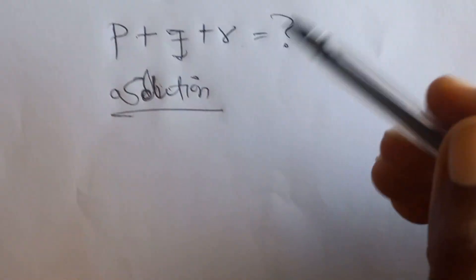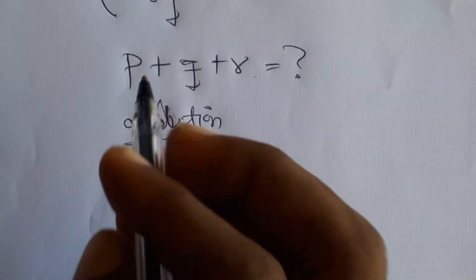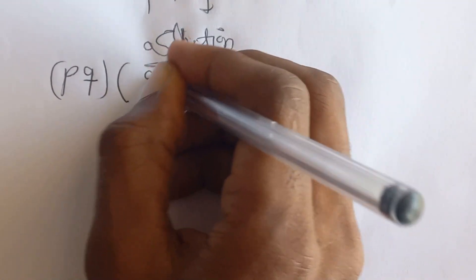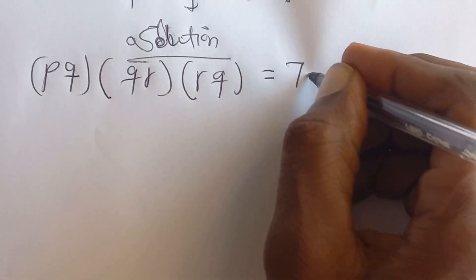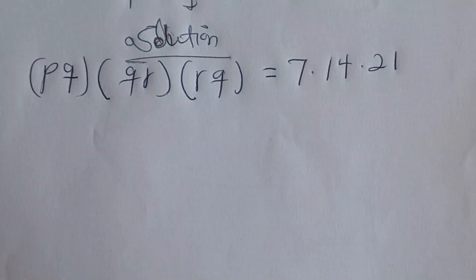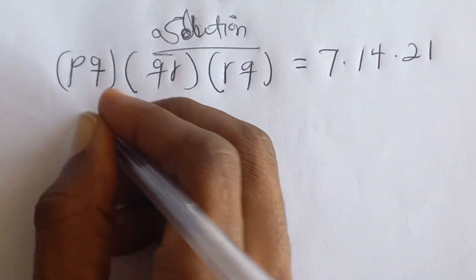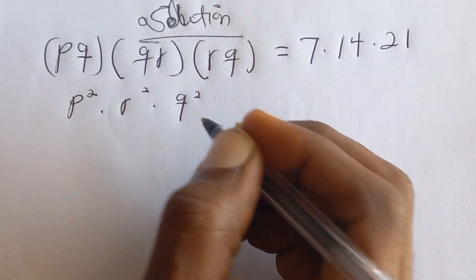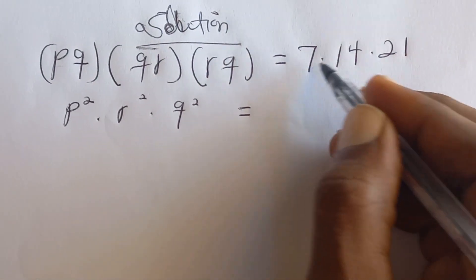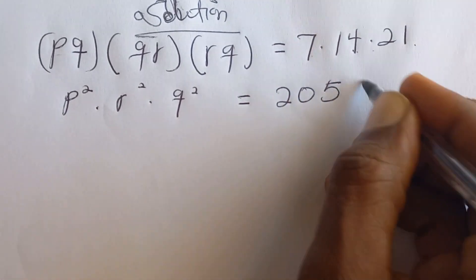What we need to do is multiply all the equations together. We are going to get PQ multiplied by QR multiplied by RP, which is equal to 7 multiplied by 14 multiplied by 21. Multiplying these out, we get P squared times R squared times Q squared, which equals 2058.